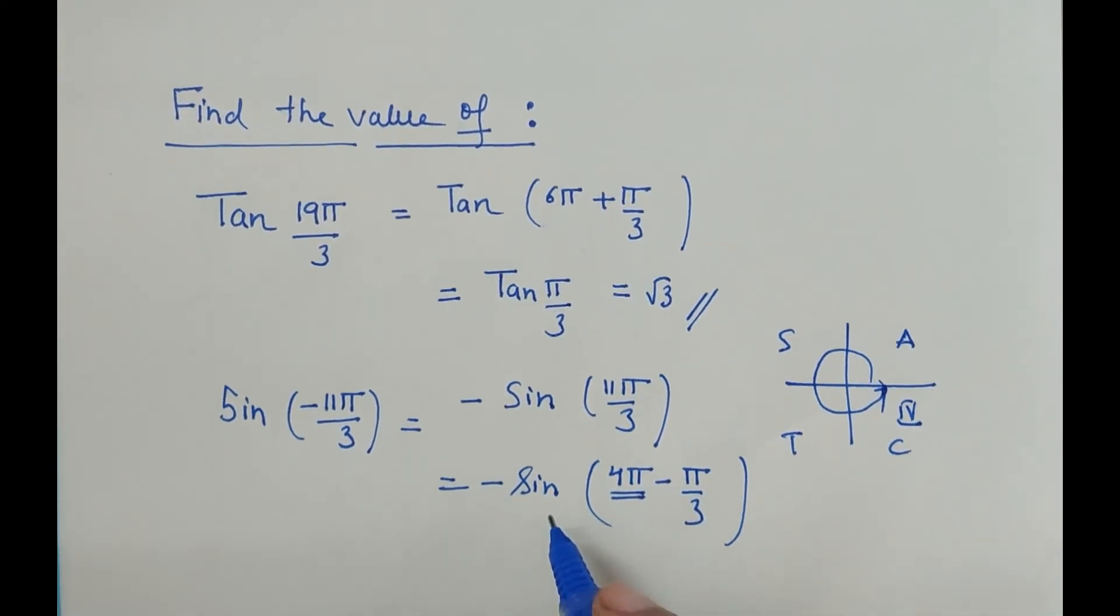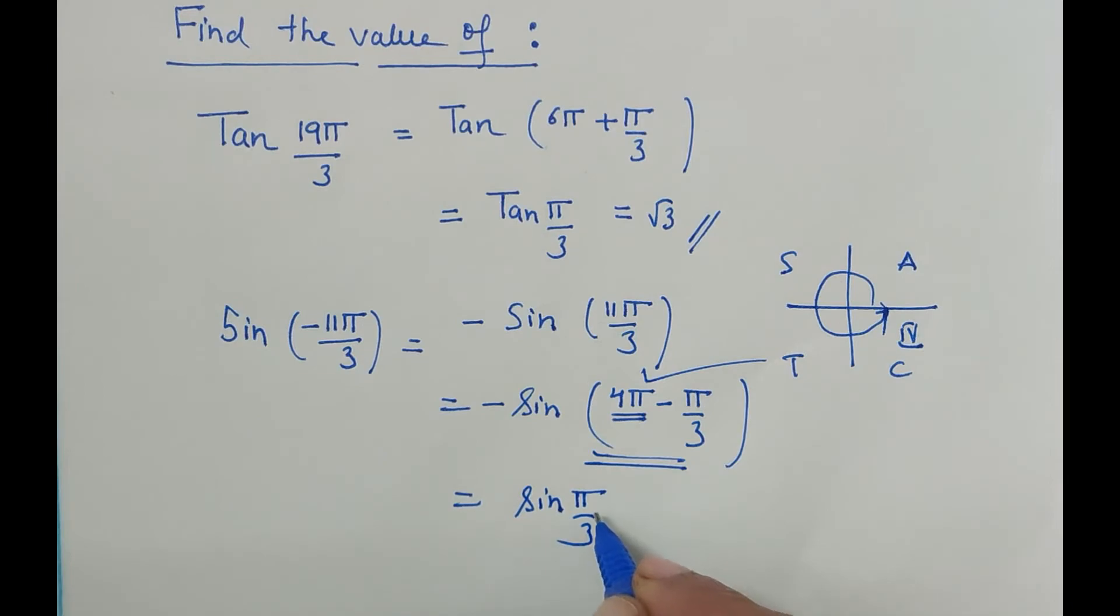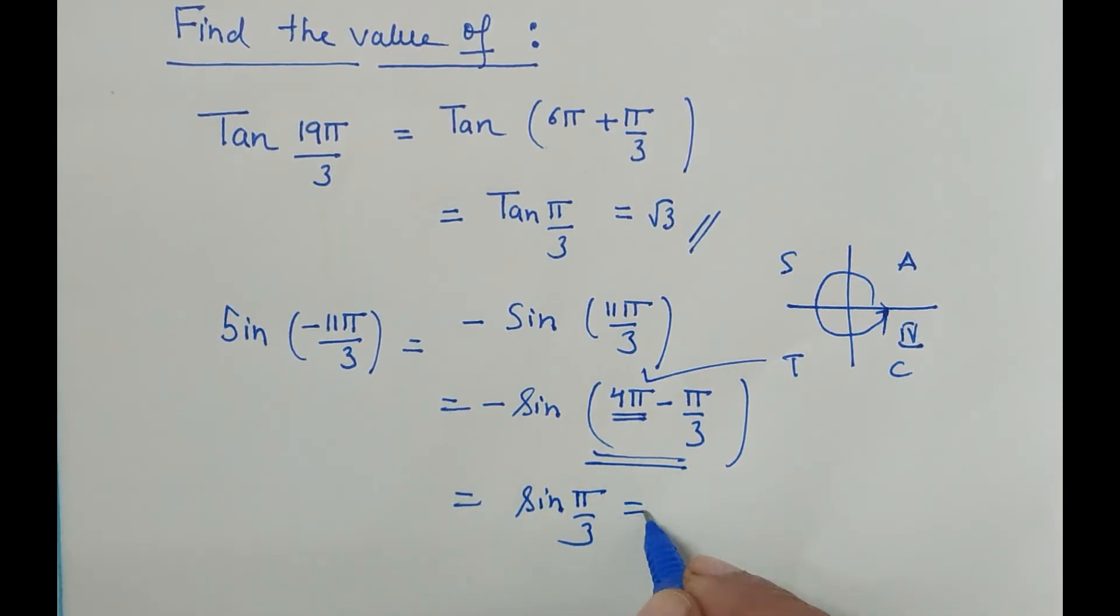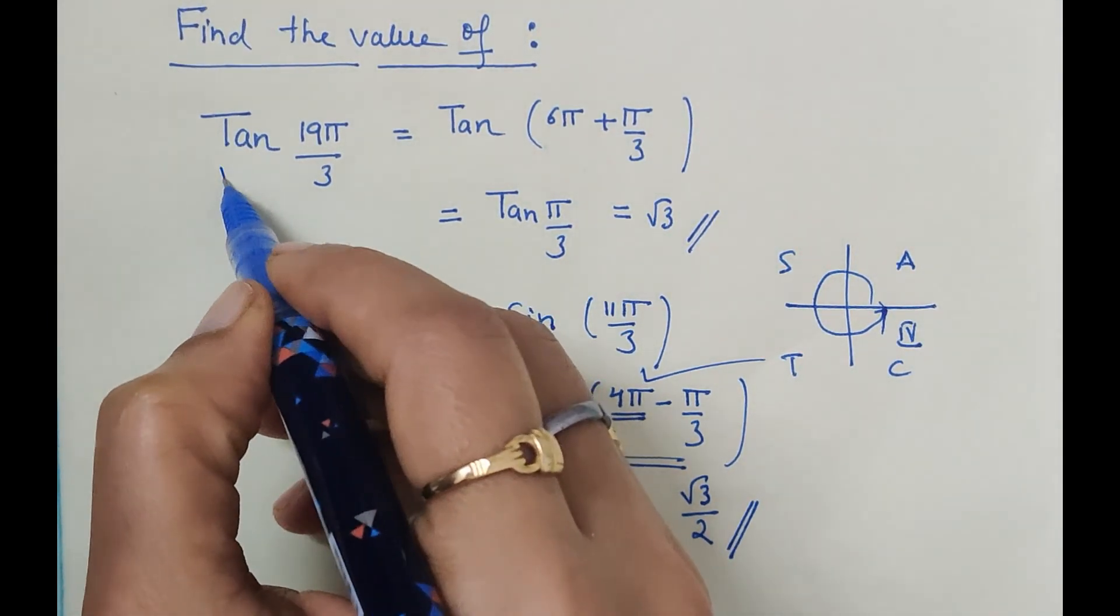Already one negative sign is there, and from this we get one more negative which makes it positive. So sine of π by 3, and π by 3 is 60°, so sine 60° is √3 by 2. This is how we can find values of trigonometric functions at different angles using the concepts of the cartesian plane and their signs in the quadrants.